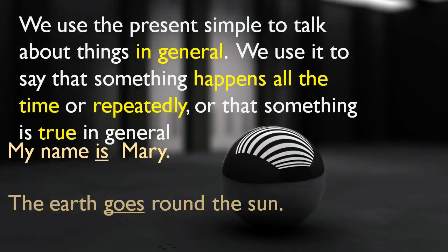We use the present simple to talk about things in general. We use it to say that something happens all the time or repeatedly, or that something is true in general. So highlight these four key words: in general, all the time, repeatedly, and something is true.